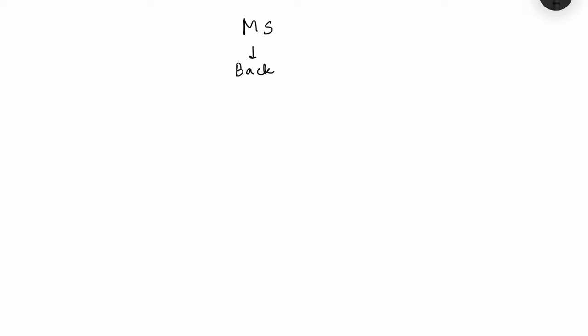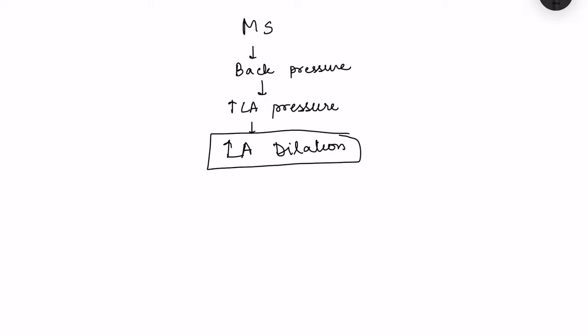When there is mitral stenosis, back pressure development increases left atrial pressure, which responds with left atrial dilation — the left atrium increases in size. Because of this dilation there will be stasis of blood. Mitral stenosis is preventing blood flow, and because of dilation there is further stasis, and whenever blood is static in any area there are increased chances of thrombus formation.